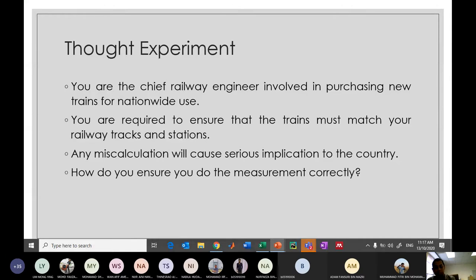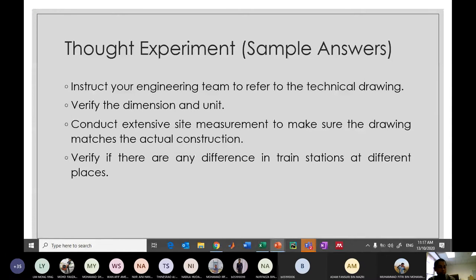Here I list sample answers. If you are the chief railway engineer, first you must instruct your engineering team to refer to the technical drawing. Find the technical drawing and determine what are the dimensions for your tracks and stations, the clearances and distances. Then you need to verify the dimension and unit, because train stations have already been built more than a few decades, maybe 50-60 years ago, and the unit and measurement at that time might be different. After you verify with the technical drawing, you need to conduct extensive site measurement to make sure the drawing matches the actual construction, and verify if there are any differences in train stations at different places.